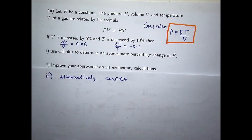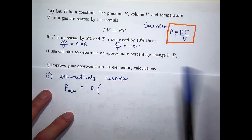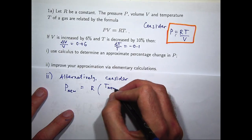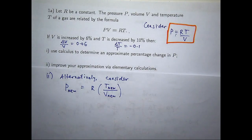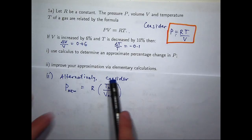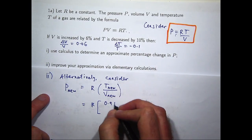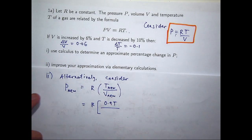Let's denote the new pressure by P sub new. According to the formula, the new pressure is just r times the new temperature divided by the new volume. The new temperature is a decrease of ten percent over the original temperature, and the new volume is a six percent increase over the original volume. So the new temperature is 0.9 times T, and the new volume is 1.06 times V.